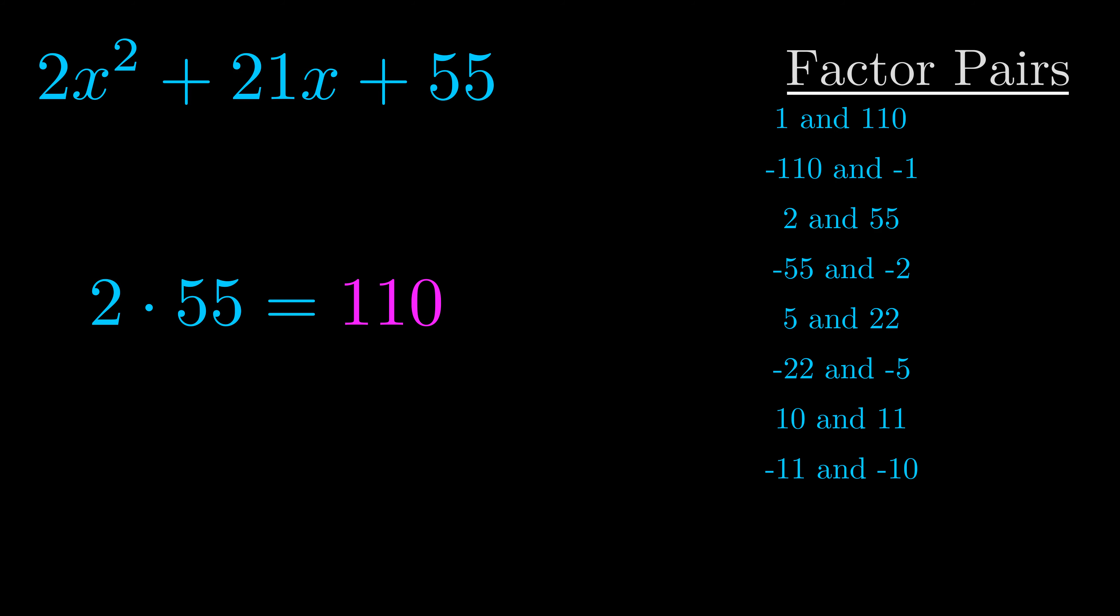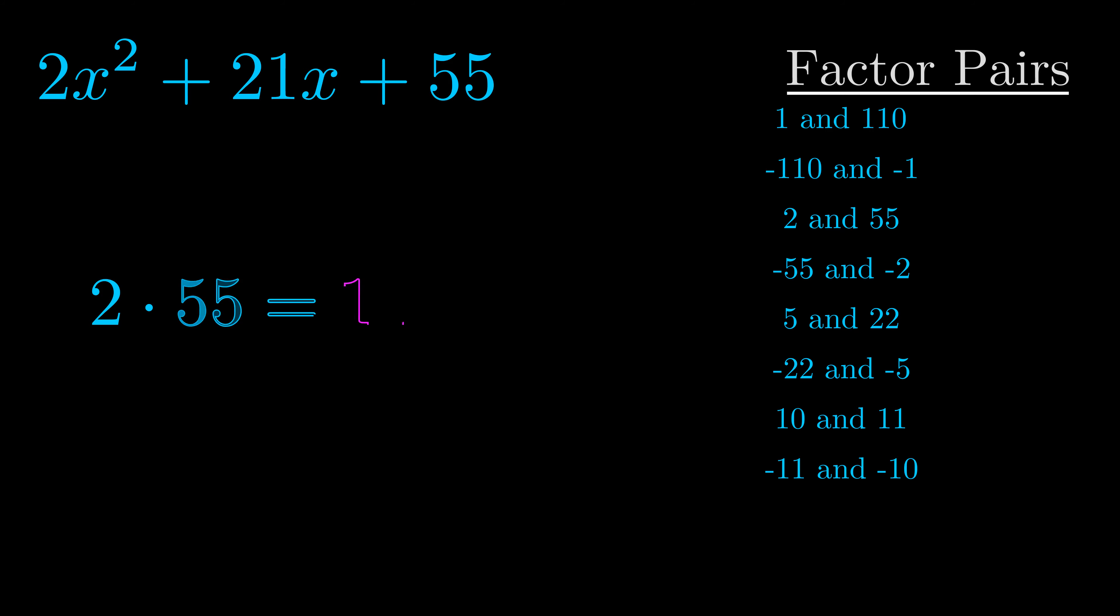Now once you have these factor pairs, the goal is to find which of these pairs adds to the b value. The b value is the coefficient on the x term. That's the middle term, the one that we haven't done anything with yet. And really this is the only factor pair that we need.